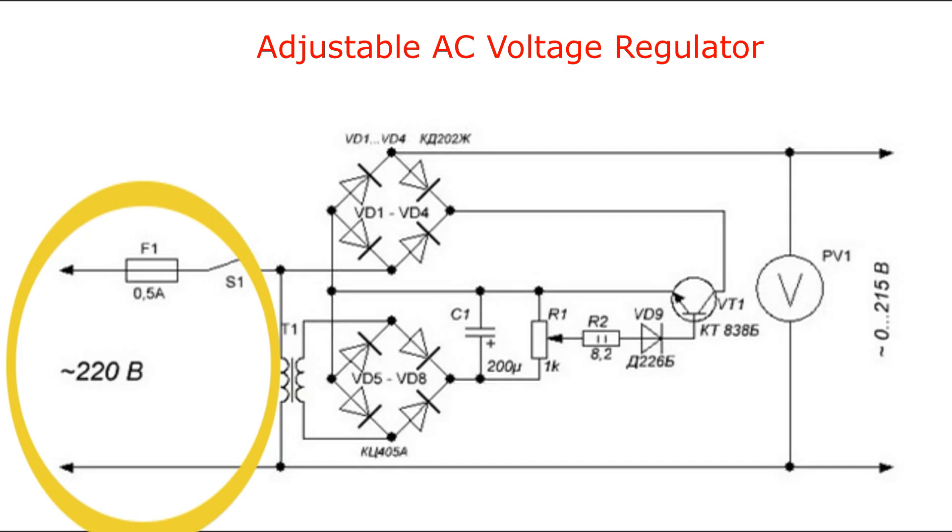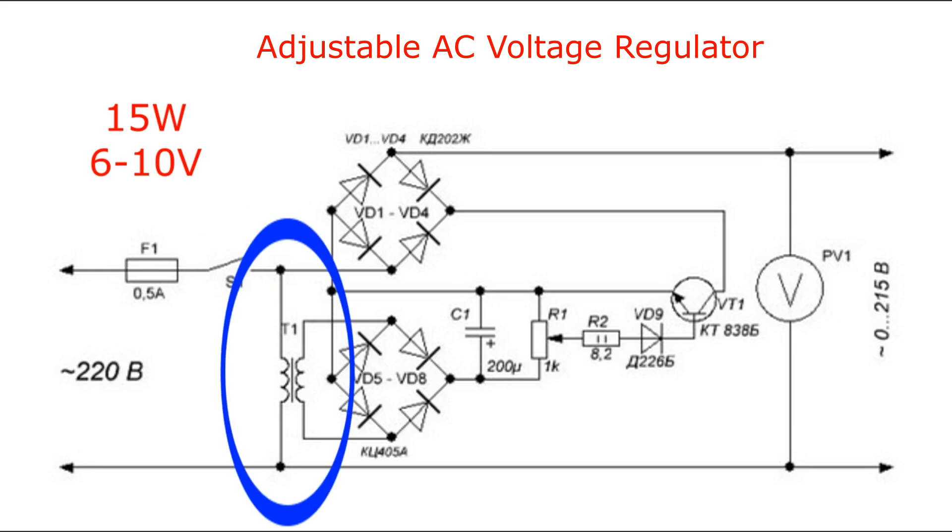This transformer has a power of up to 15 W with a secondary winding voltage of 6 to 10 V. A unique feature of this circuit is the use of bipolar transistor T1 as the regulating element.